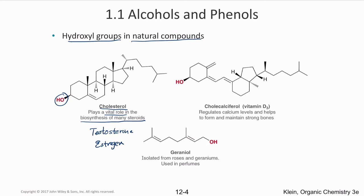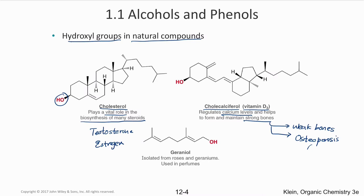Many steroidal compounds require cholesterol. Vitamin D3 (cholecalciferol) regulates calcium levels and maintains bone structure — its deficiency leads to weaker bones and can cause osteoporosis. Geraniol, isolated from roses and geraniums and used in perfumes, also contains an OH group.